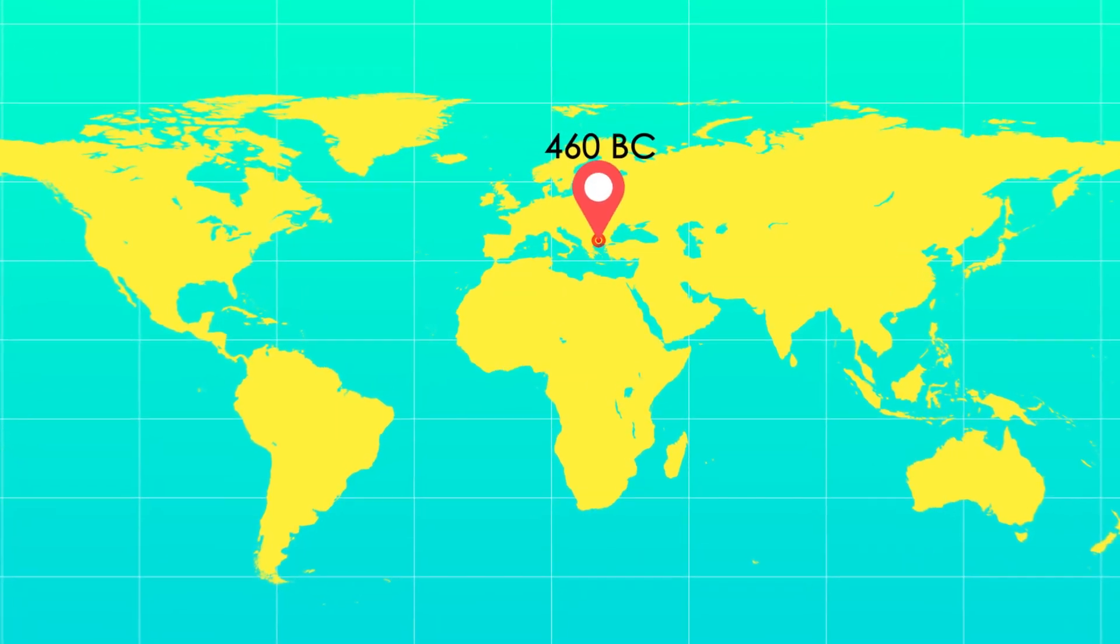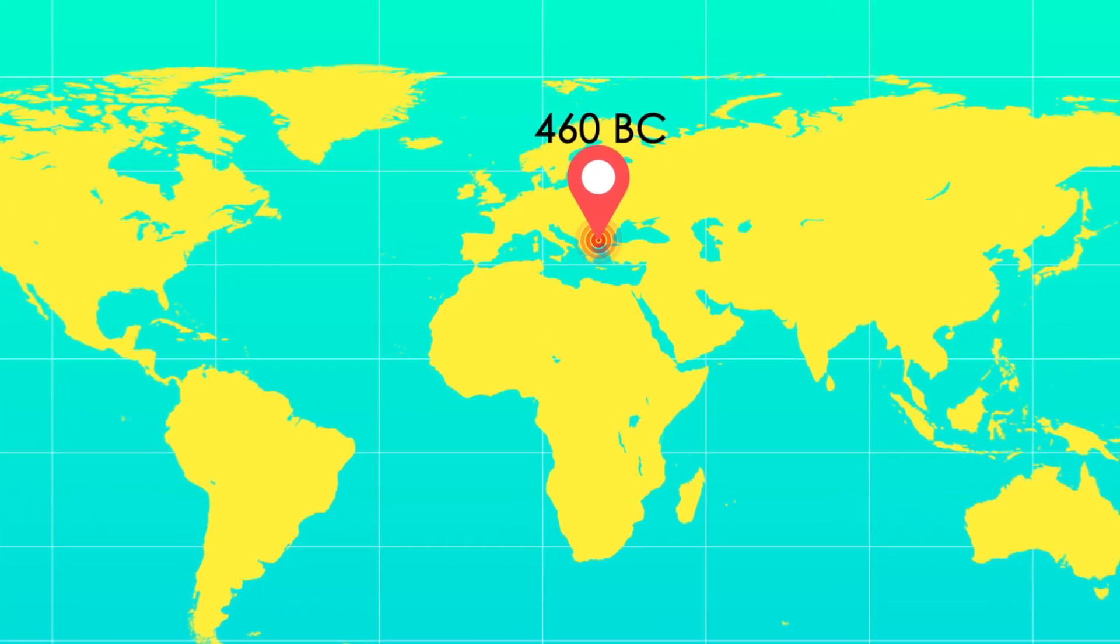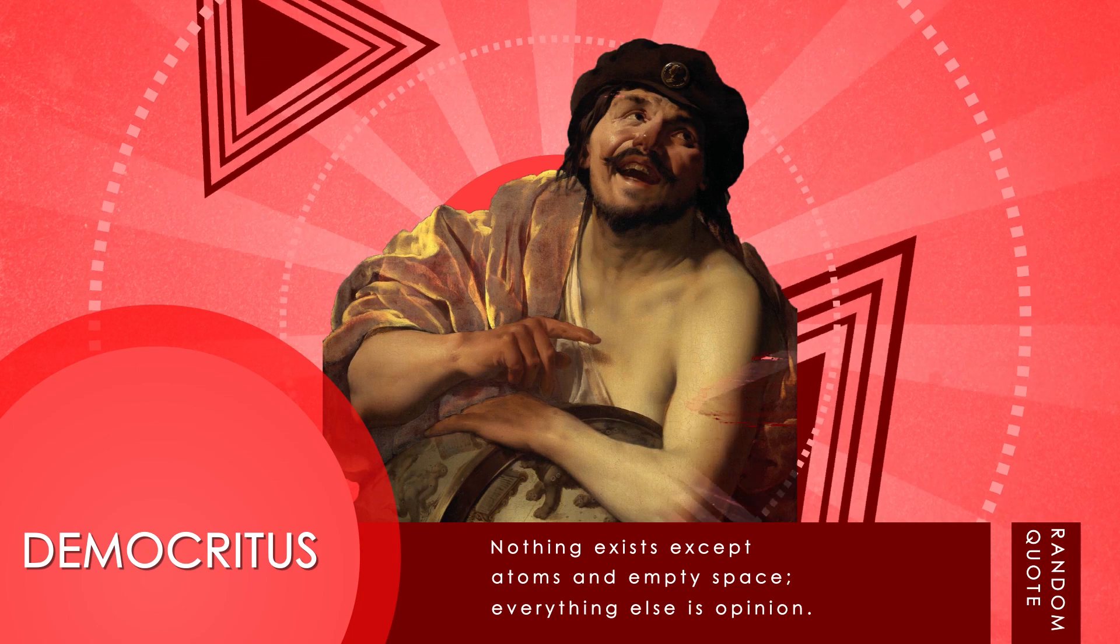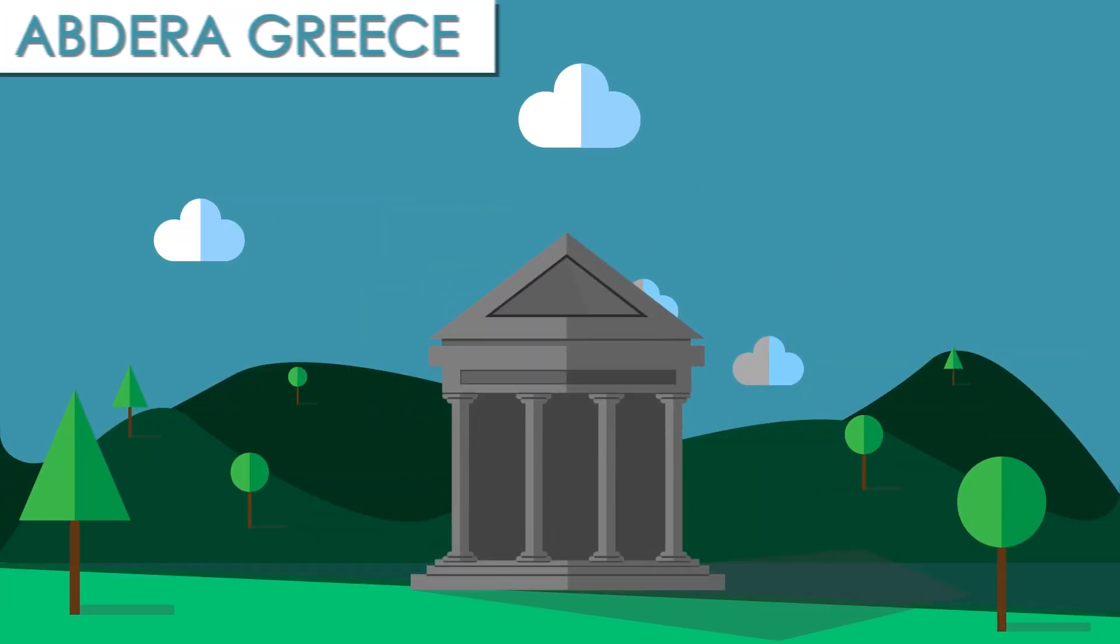Democritus was born in Abdera, Greece in 460 BC and was the son of an extremely wealthy nobleman. He had a tremendous hunger for knowledge and traveled the world. When he returned to Greece, he occupied himself with the study of natural philosophy.